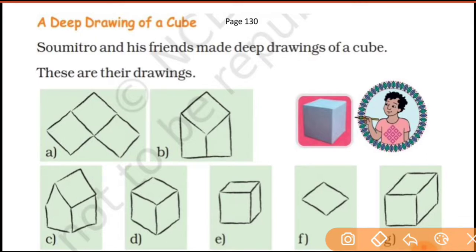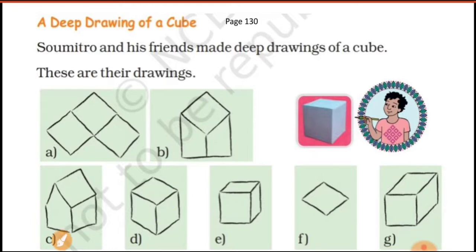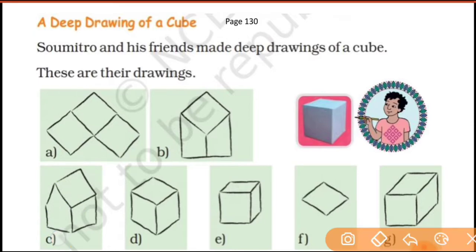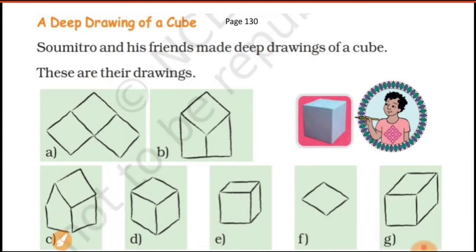This correct deep drawing shows all the views — front view, side view, and left view. This next one is also correct. But here this face is not a square — in a cube, all the faces are square — so this face is not square and this is not a correct deep drawing.